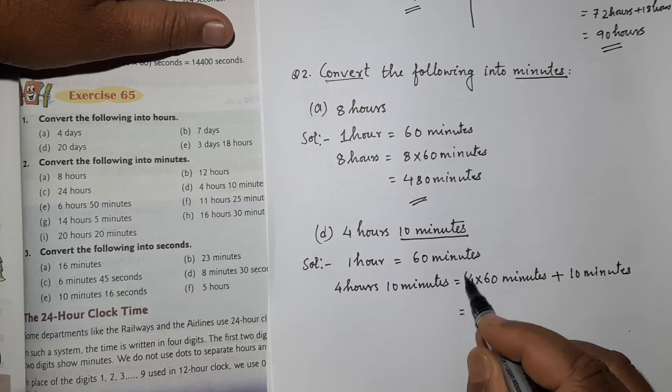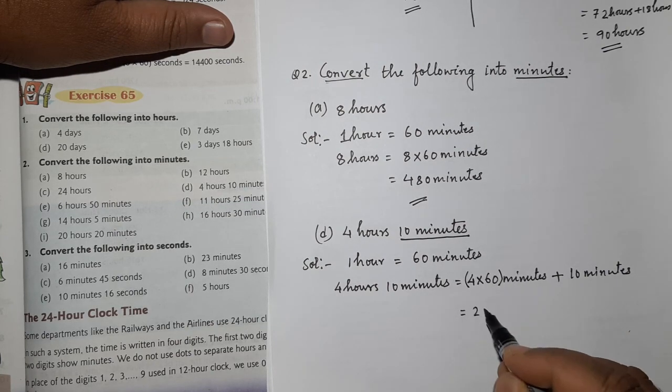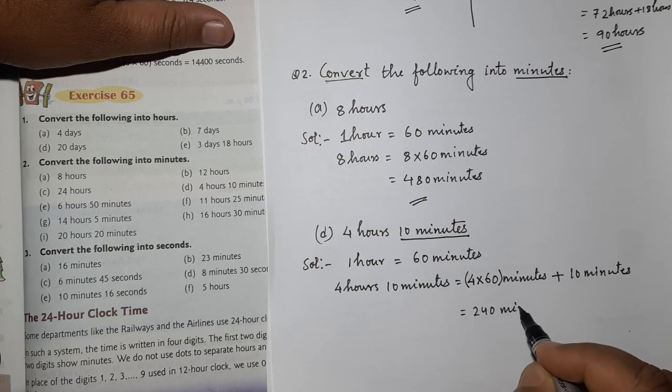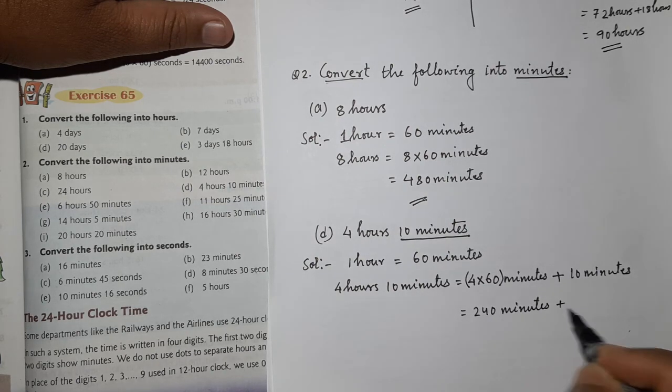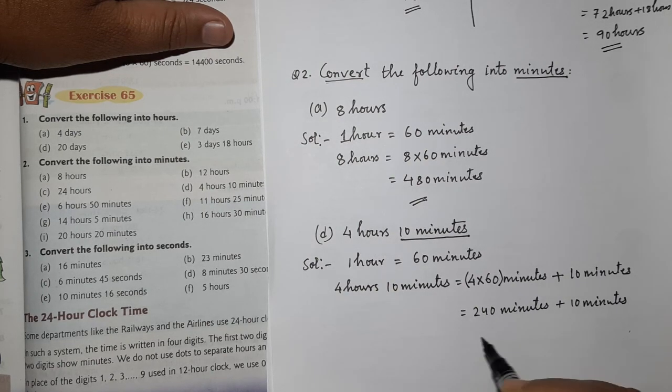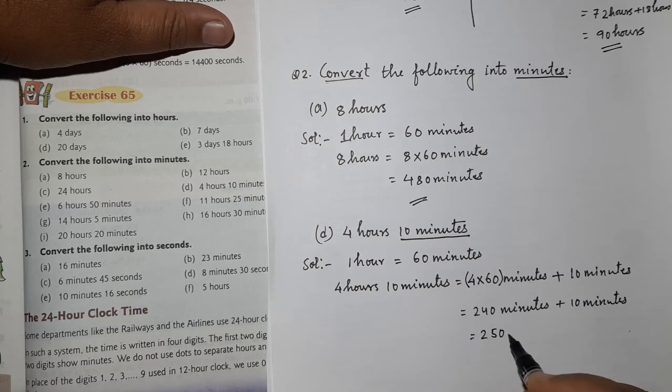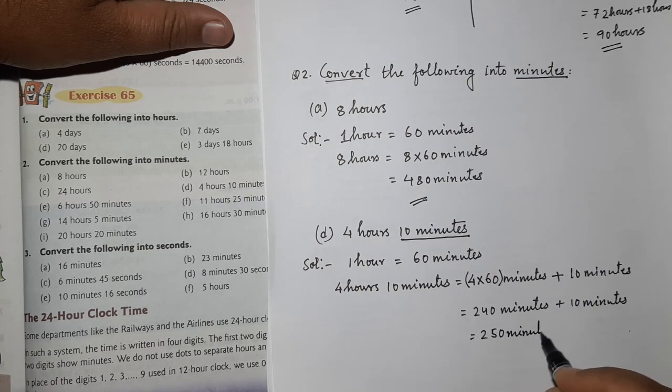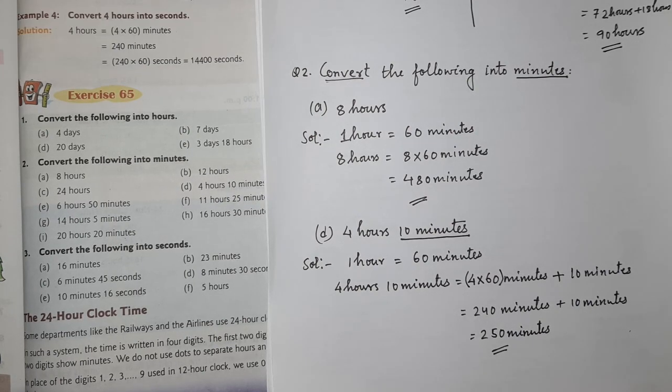Now when I multiply, what will I get? 6 into 4 is 24 and 0. 240 minutes. Plus 10 minutes. So my answer will be 250 minutes. Thank you.